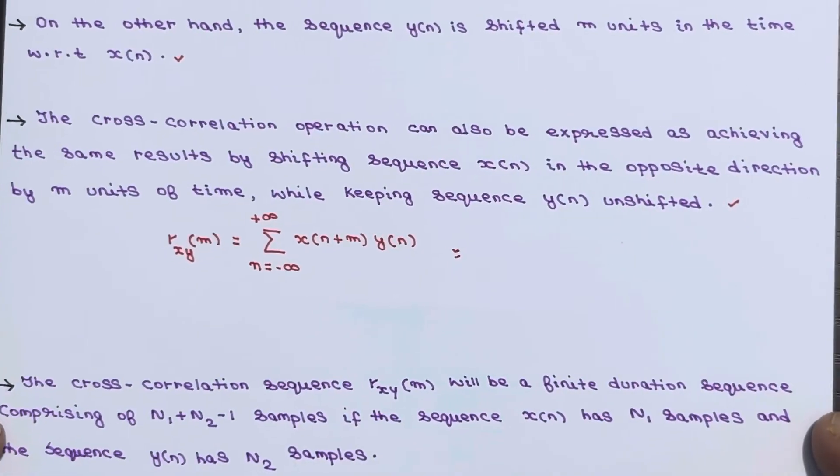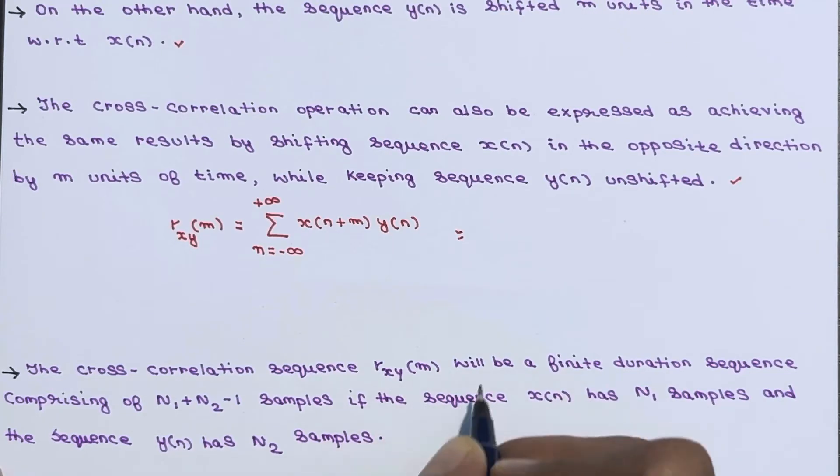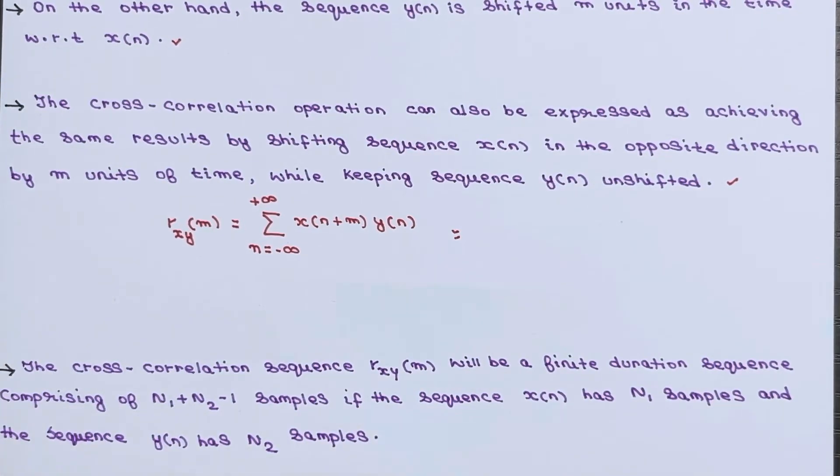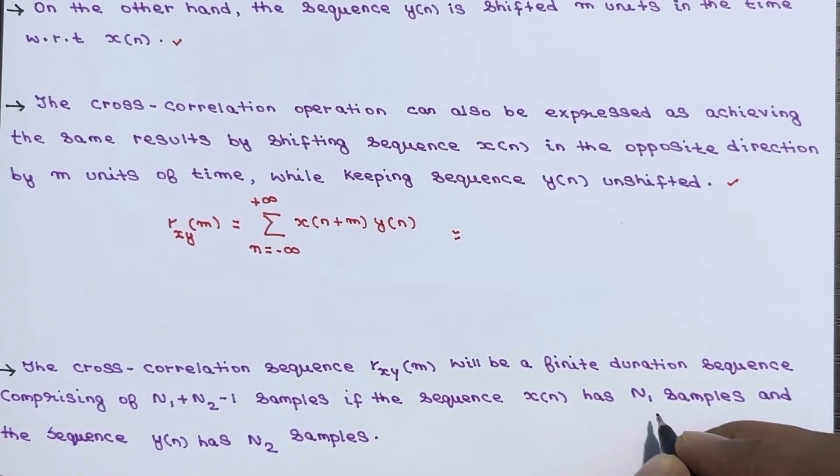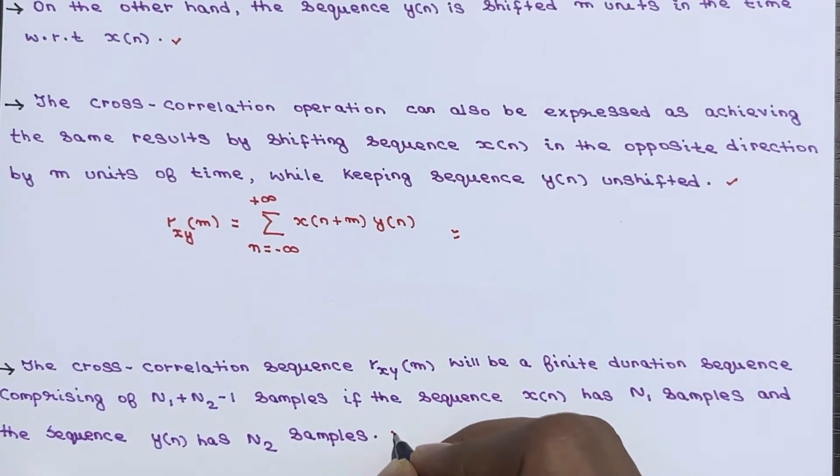Now one last point about this. So the cross-correlation sequence rxy of m will be a finite duration sequence comprises of n1 plus n2 minus 1 samples. If the sequence x of n has n1 samples and the sequence y of n has n2 samples, the correlation sequence will have n1 plus n2 minus 1 samples. So this is all about the cross correlation.